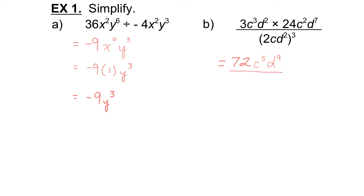Now the denominator: we have the bracket to the exponent 3, which means that exponent 3 applies to each part of the term in the brackets. 2 to the exponent 3 is 2 times 2 times 2, which is 8. c to the exponent 3 stays as c to the exponent 3. Then d squared to the exponent 3 — this is a power of a power. You can add 2 plus 2 plus 2, or use the rule and multiply the exponents: 2 times 3 is 6. So the denominator is 8c to the exponent 3, d to the exponent 6.